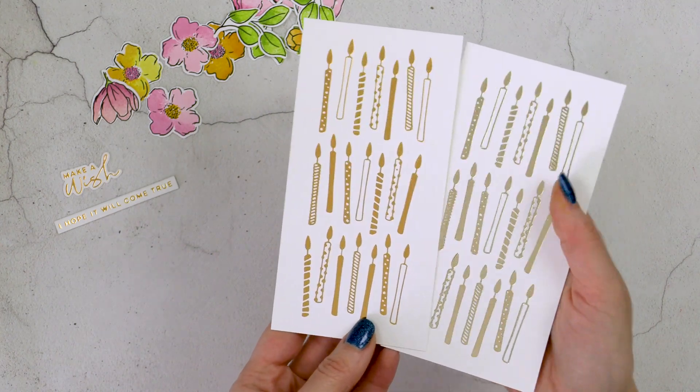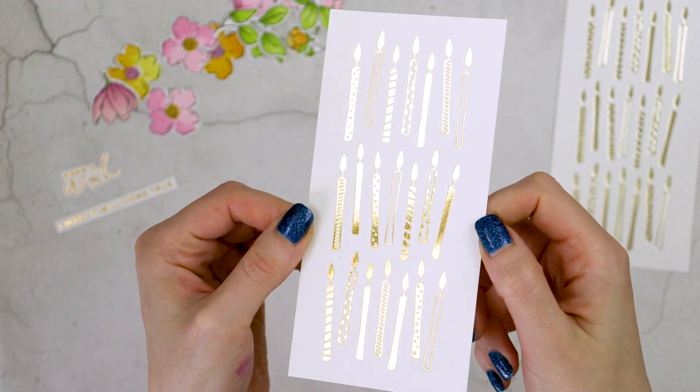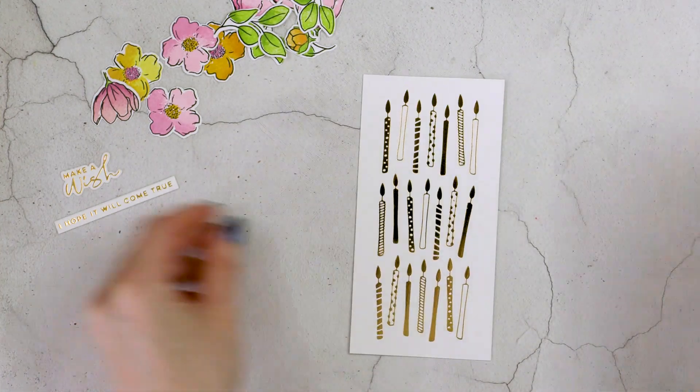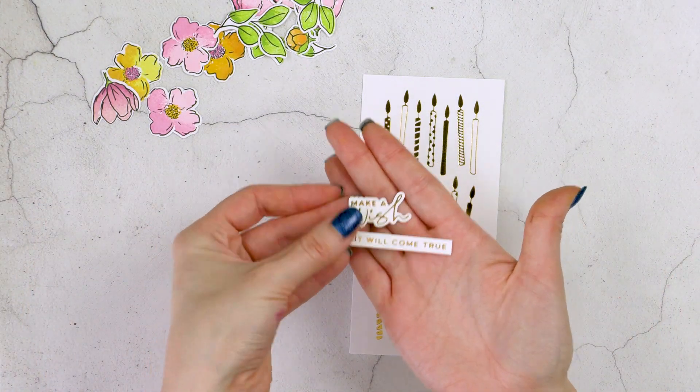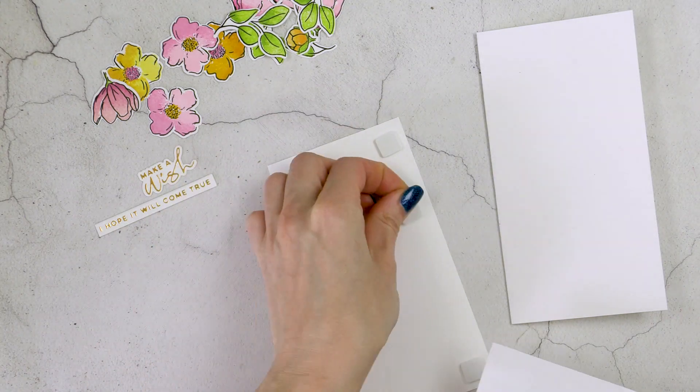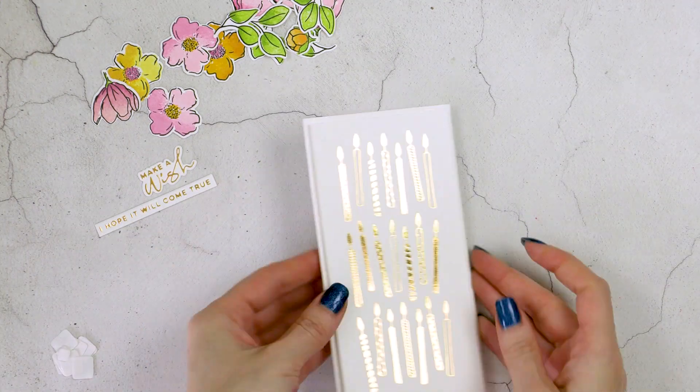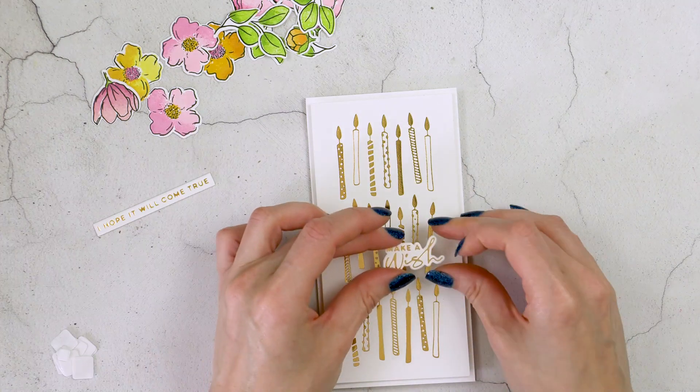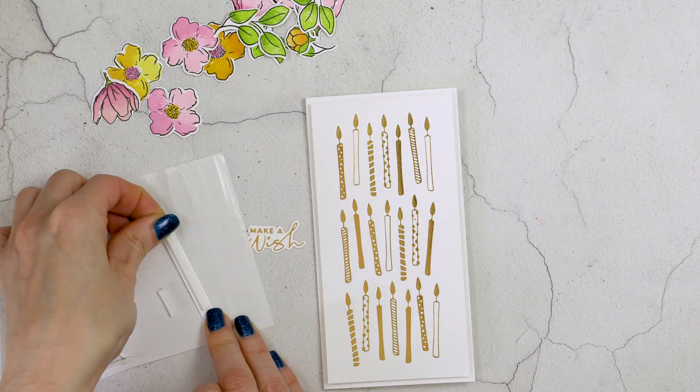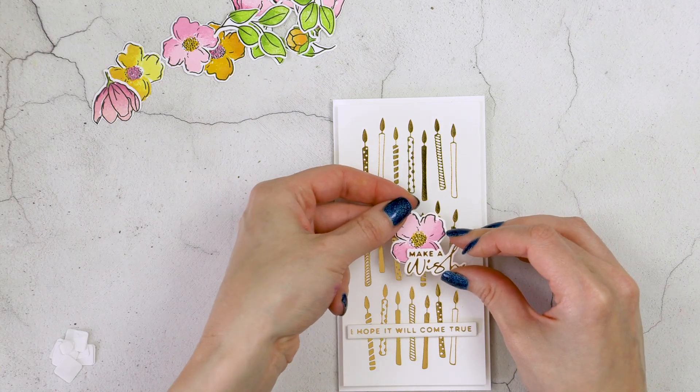Now to create my second card like I said it's going to be an identical design but the foiling is done on paper versus acetate so I foiled make a wish sentiment and I foiled another sub sentiment that reads I hope it will come true. I cut all of these out using the coordinating dies and now I'm just going to foam mount my foiled candle background onto a card base so I already created a card base and this measures three and a quarter by six and a quarter inches a mini slimline and I used Neenah Solar White 110 pound cardstock to create this card base and I just foam mounted my foiled candle background on top.